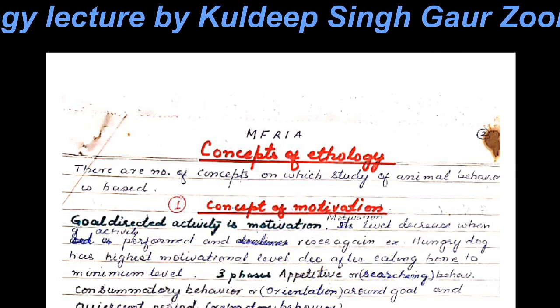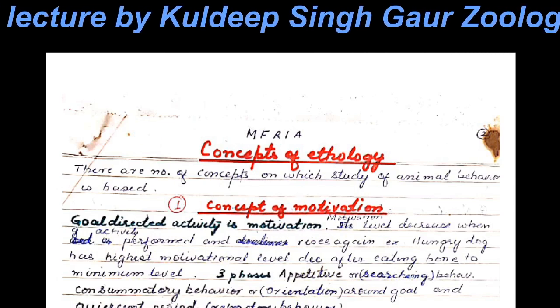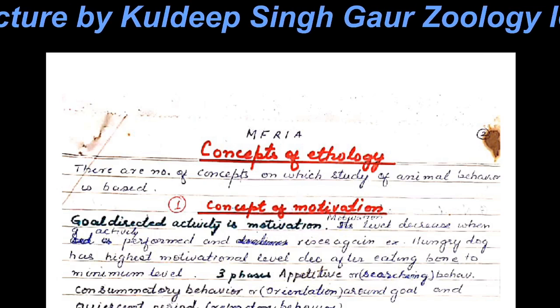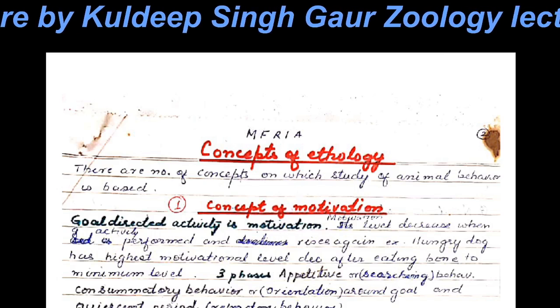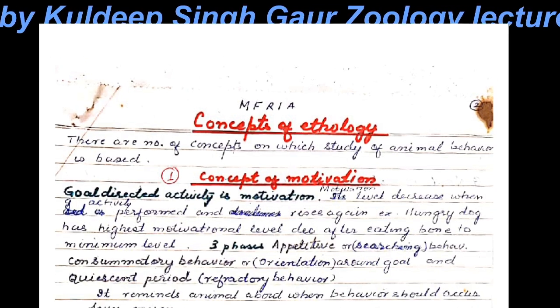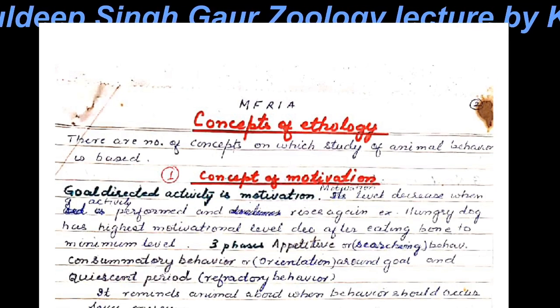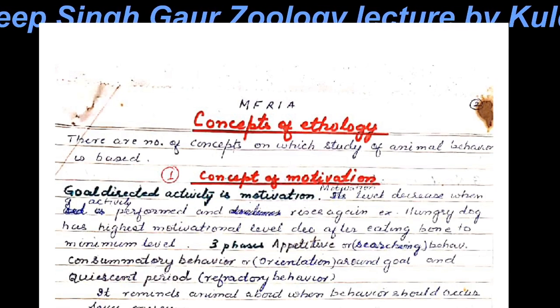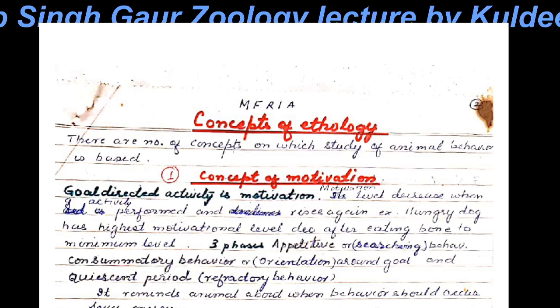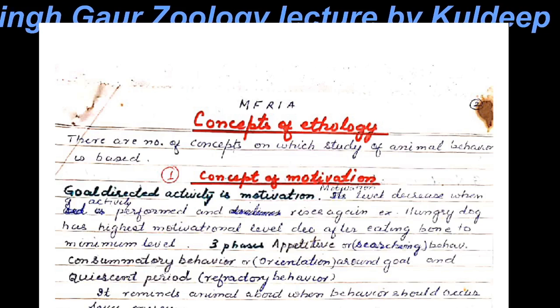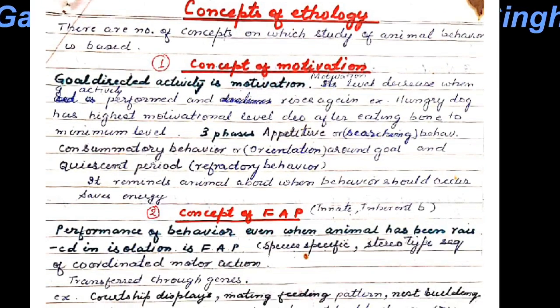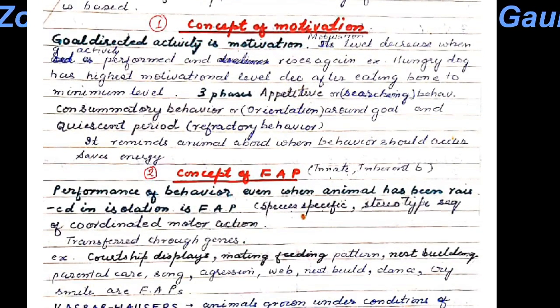Now let us come to the concepts of ethology. The whole subject of ethology stands on some concepts, such as the concept of motivation and the concept of fixed action pattern, among others.